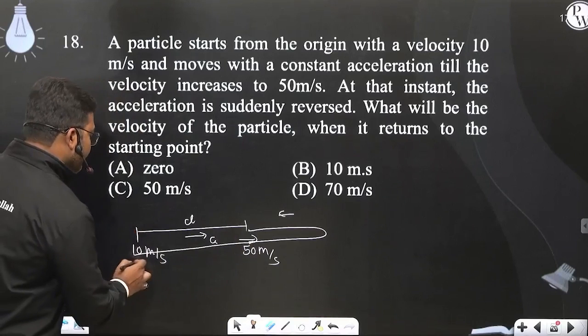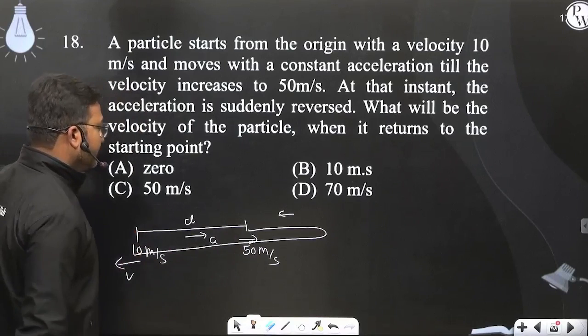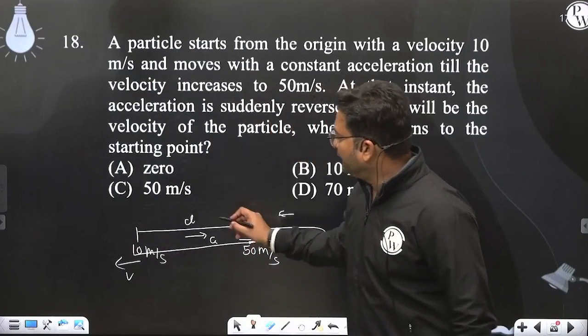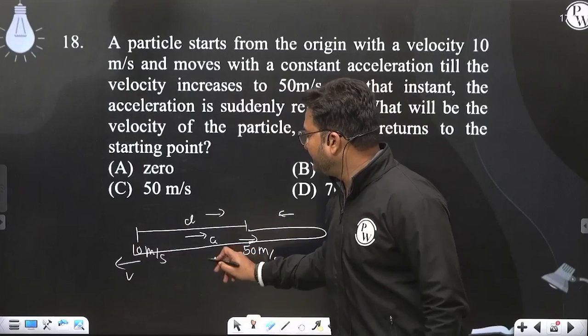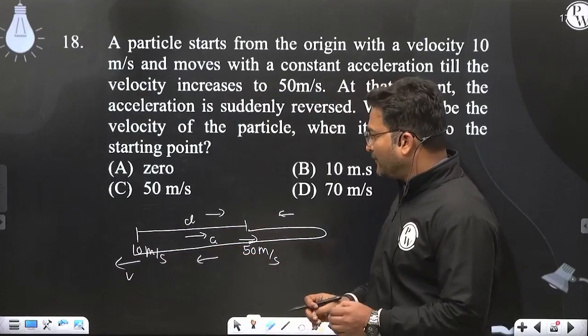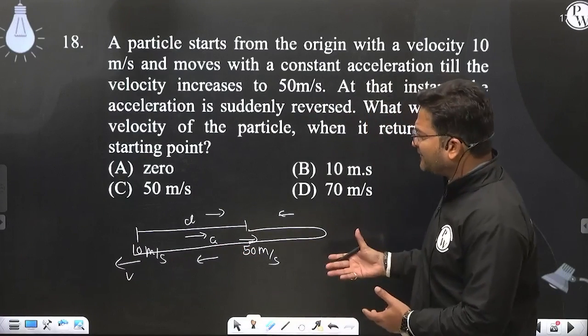So this is the velocity of the particle, because this is the velocity in the beginning. So this is the velocity here, which is the velocity.